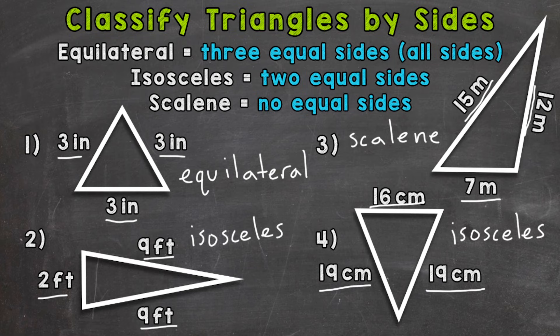So there you have it. There's how you classify or name triangles based on their sides. We have equilateral triangles, all three sides equal, isosceles triangles, two equal sides, and then scalene triangles, no equal sides.